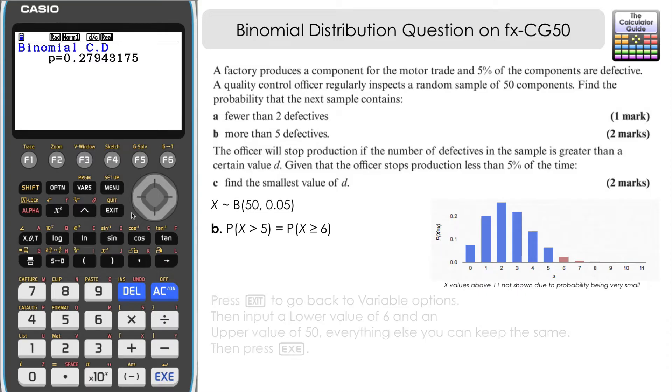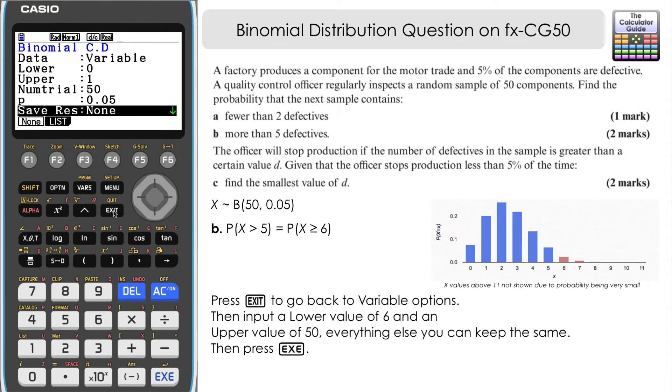If we press exit to go back to our variable page, we just need to change the lower and upper limits here, the N and P values will just stay the same. So our lower limit, well, the lowest that we want is six. And the upper limits, that would be our maximum possible. That's if all 50 components were defective. So our upper limit is 50. Everything else, we can just keep the same at this stage.